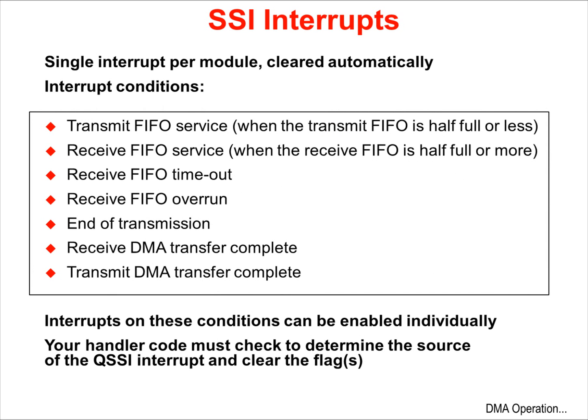Each SSI module can provide an interrupt to the CPU. Since this is a single source interrupt, it will be cleared automatically. Conditions under which an interrupt can be generated are: when the transmit FIFO is half full or less, when the receive FIFO is half full or more, if the receive FIFO times out, if the receive FIFO overruns, at the end of the transmission, or when the receive or transmit DMA transfer is complete. You can enable interrupts to occur on these conditions individually, and your interrupt handler code must check to determine the source of the SSI interrupt and clear the appropriate flags.